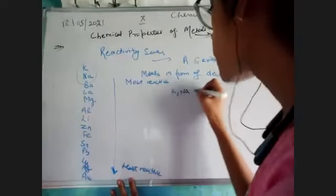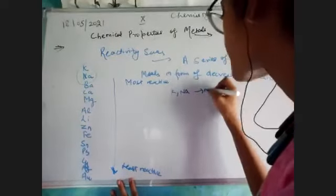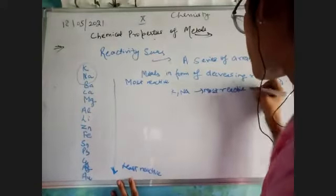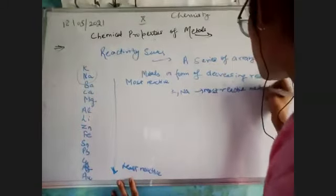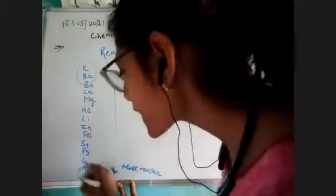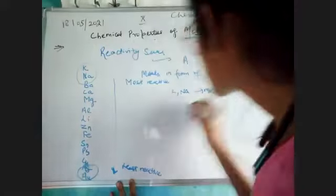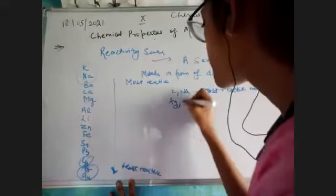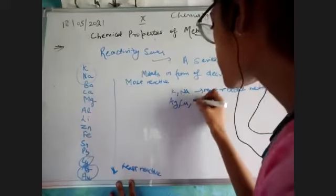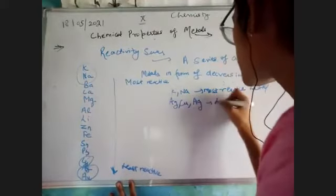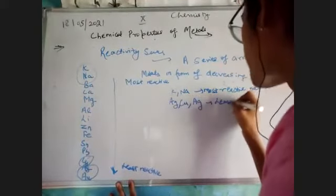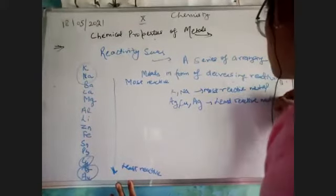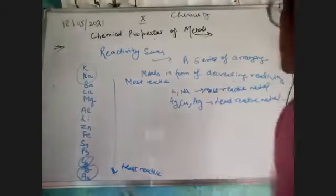From all the examples we have seen so far, it is clear that sodium and potassium are the most reactive metals. Silver, copper, and gold are the least reactive metals.